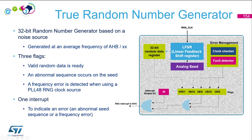There is also a frequency error detected on the RNG clock source — in this case you can still use the random data, but it's your decision. This is a key hardware block in the sense that for cryptographic applications, having a real true random number generator is quite important.